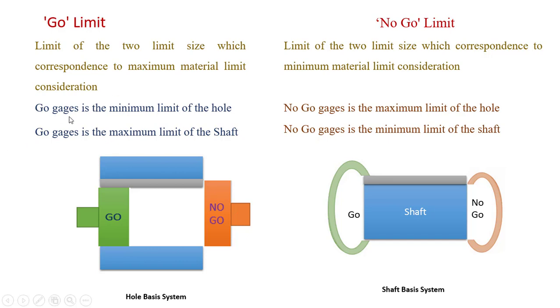Go gauge is minimum limit of the hole. This one is the hole. The minimum limit of the hole, the go gauge should enter. Go gauge is maximum limit of the shaft. This is the maximum limit of the shaft. The go gauge should enter on the maximum limit. Then no-go gauge is maximum limit of the hole. This no-go gauge should not enter into the maximum limit of the hole. No-go gauge is minimum limit of the shaft. This is the minimum limit of the shaft. This no-go gauge should not enter to the minimum limit.